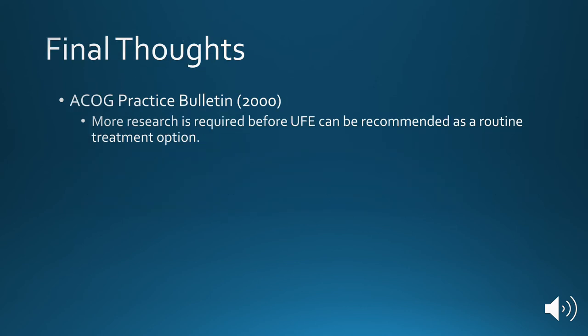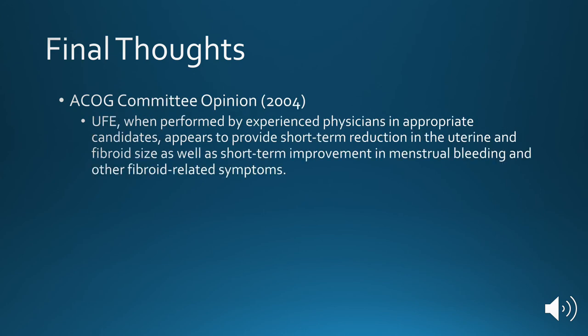I want to end this series of lectures with one final thought, and this is the response of the American College of Obstetrics and Gynecology to this procedure. In 2000, ACOG issued their first practice bulletin, and what they said was that more research is required before fibroid embolization can be recommended as a routine treatment option. In 2004, this opinion was adjusted. What they said at that time was that UFE, when performed by experienced physicians and appropriate candidates, appears to provide short-term reduction in the uterine and fibroid size, as well as short-term improvement in menstrual bleeding and other fibroid-related symptoms.